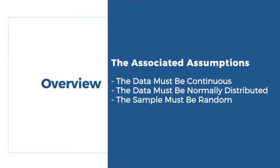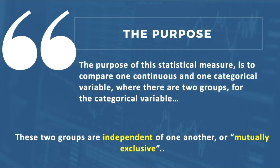Now let's investigate the overall function and purpose of the independent samples t-test. The purpose of this statistical measure is to compare one continuous and one categorical variable, where there are two groups for the categorical variable. For a brief example, let's consider comparing how males and females perform on the SAT.